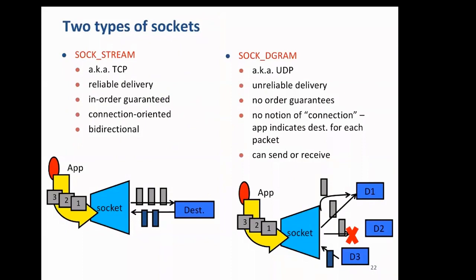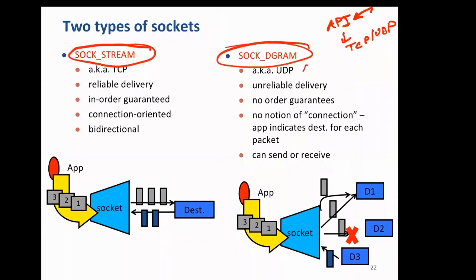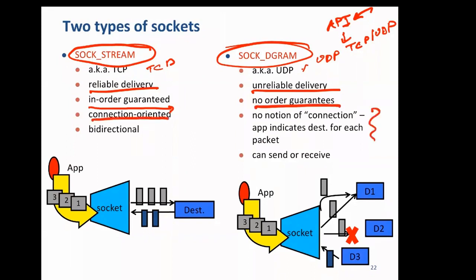A socket is basically an API or interface — the application uses a socket, which internally uses TCP or UDP. There are two types of sockets: SOCK_STREAM, which corresponds to TCP, and SOCK_DGRAM, which corresponds to UDP. TCP provides reliable delivery; UDP provides unreliable delivery. TCP guarantees packets are delivered in order, even though the IP layer does not. TCP is connection-oriented; UDP is not.